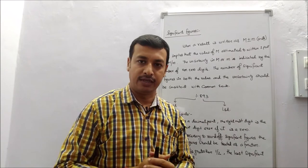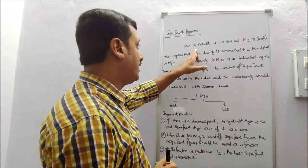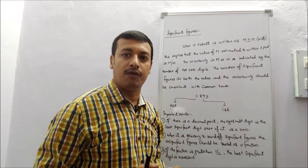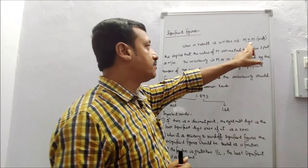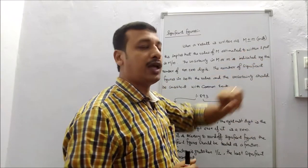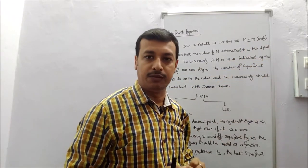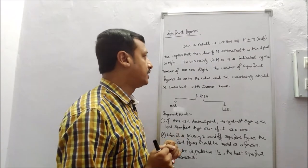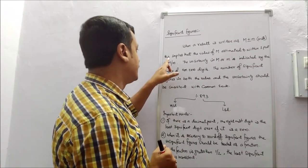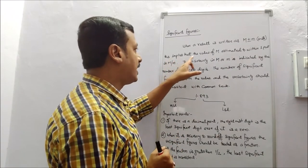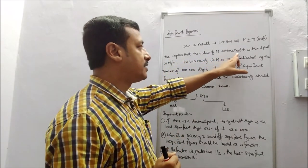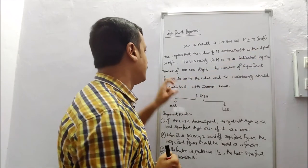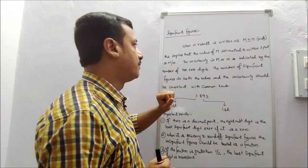What is a significant figure? When the result is written in the form of M (capital M) plus-minus δM, in terms of the unit of the physical quantity, this implies that the value of capital M is estimated to within one part in M/δM.